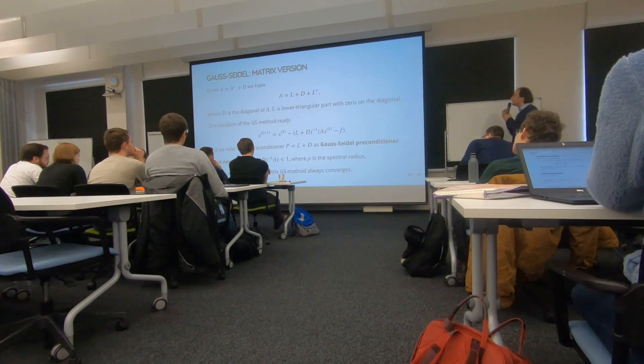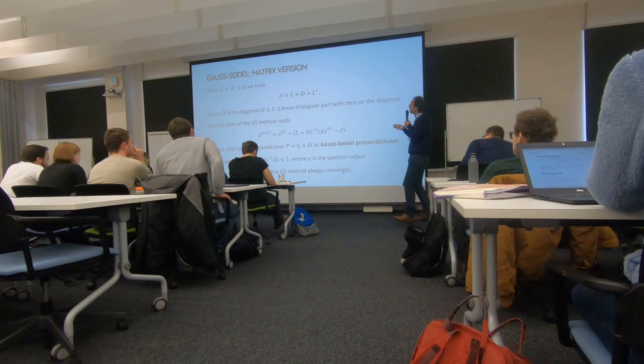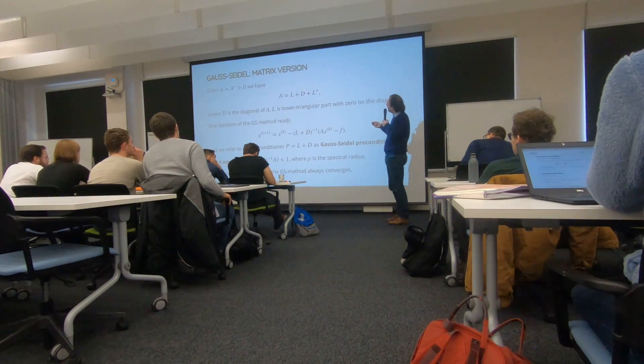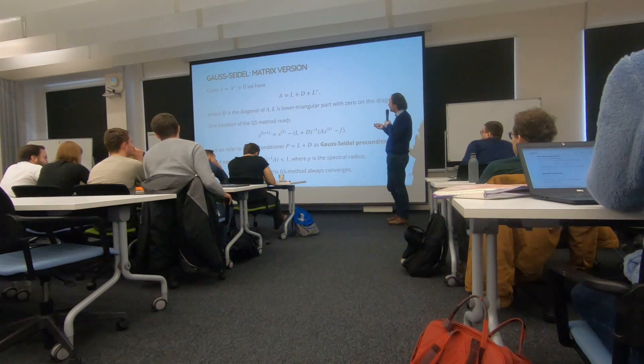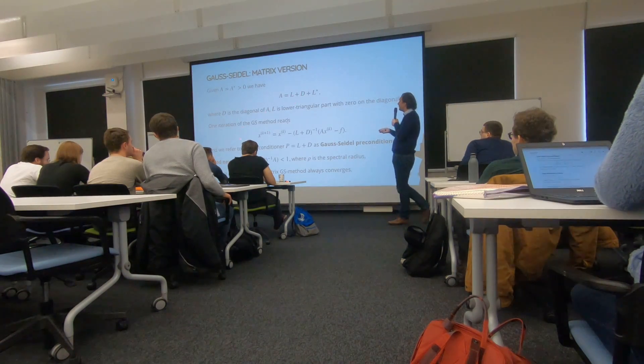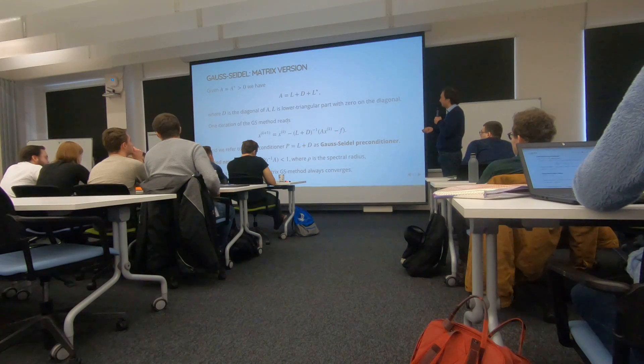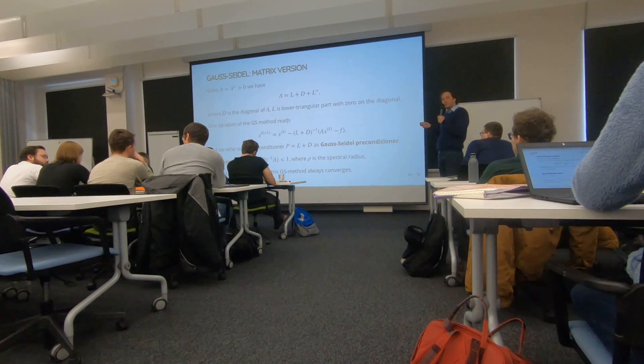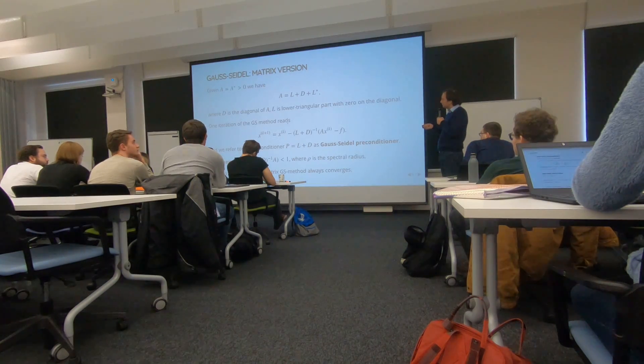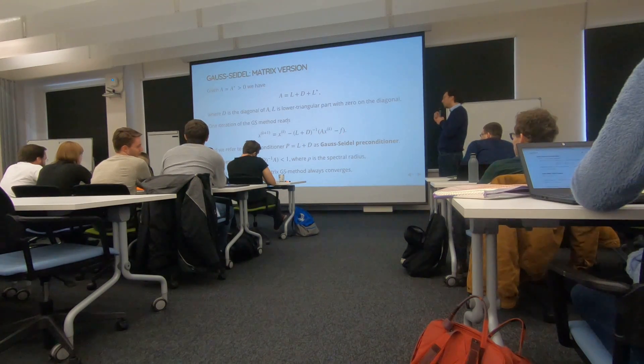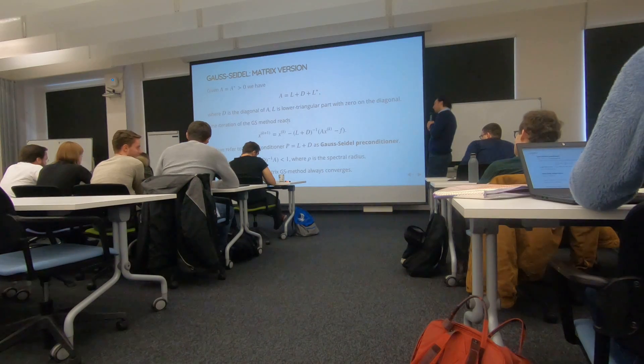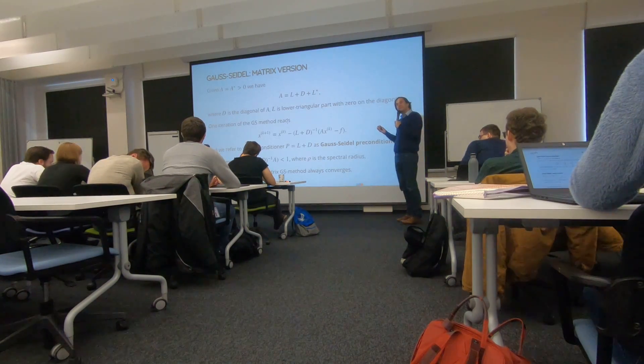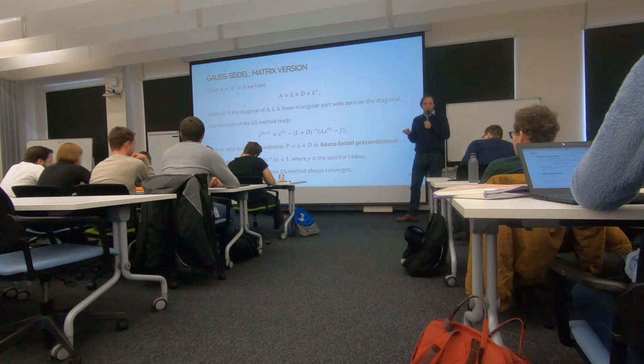So consider the symmetric positive definite case. Then we can split our matrix as a lower triangular part with zero on the diagonal, the diagonal part, and the Hermitian transpose. So diagonal and split. So then one iteration of the Gauss-Seidel method computes this. So we invert the lower triangular part of the matrix and multiply it by the residual. So again, the same philosophy.